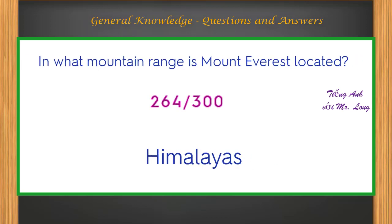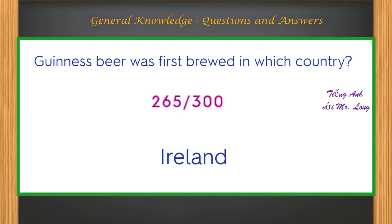In what mountain range is Mount Everest located? Himalayas. Guinness beer was first brewed in which country? Ireland.